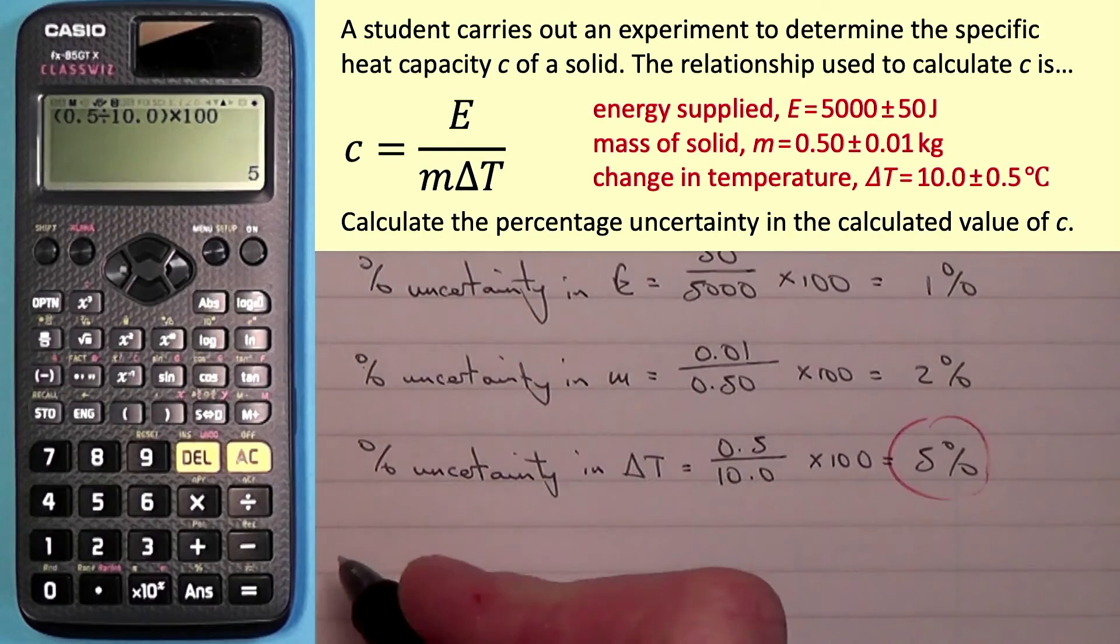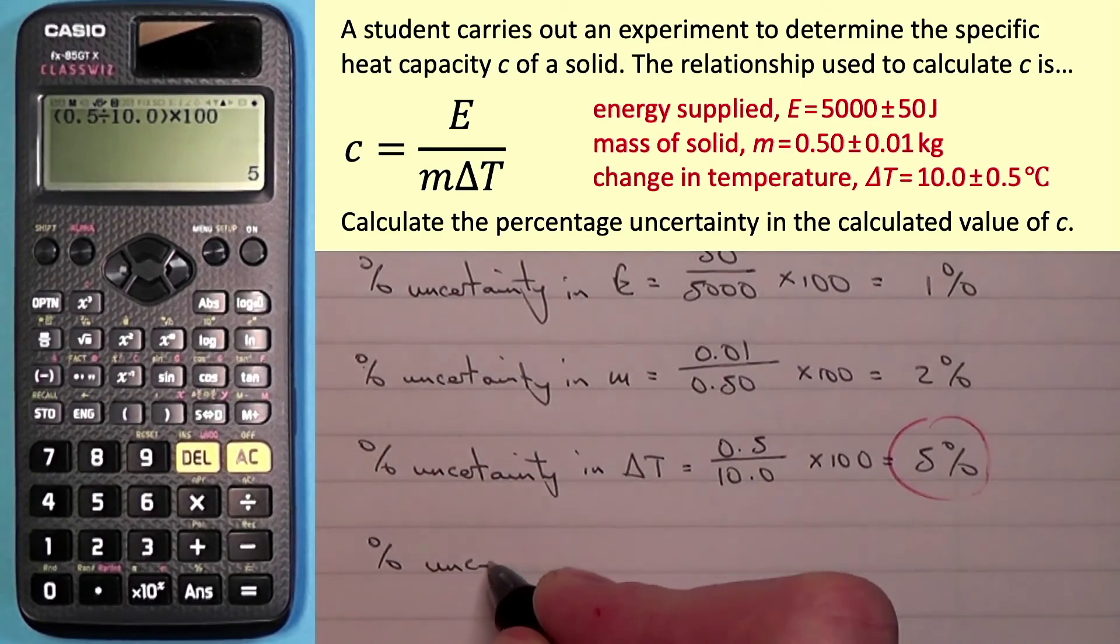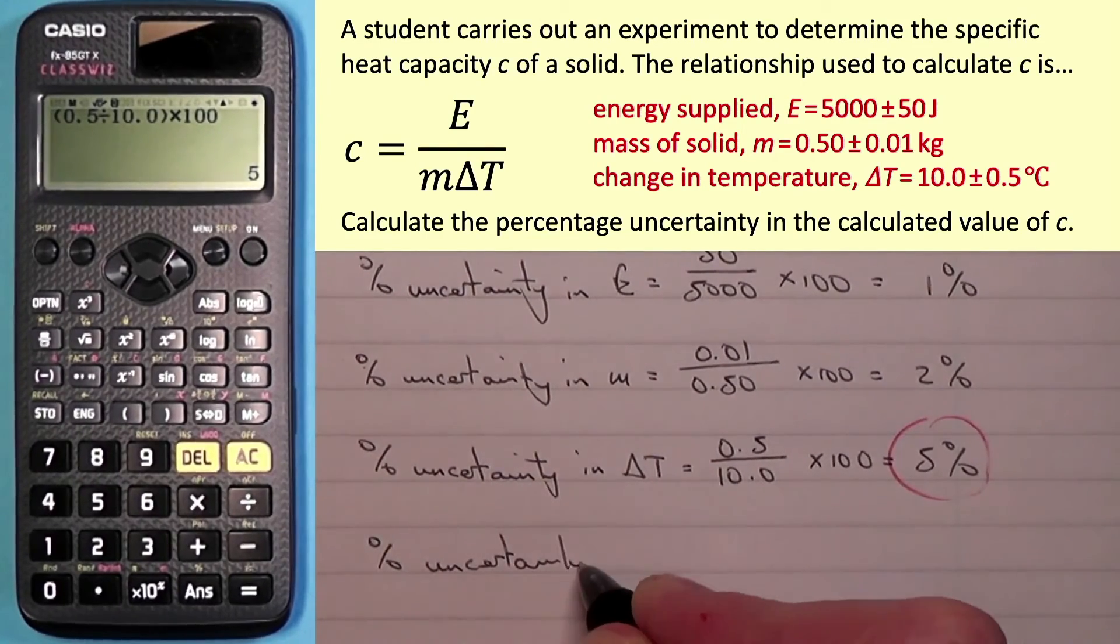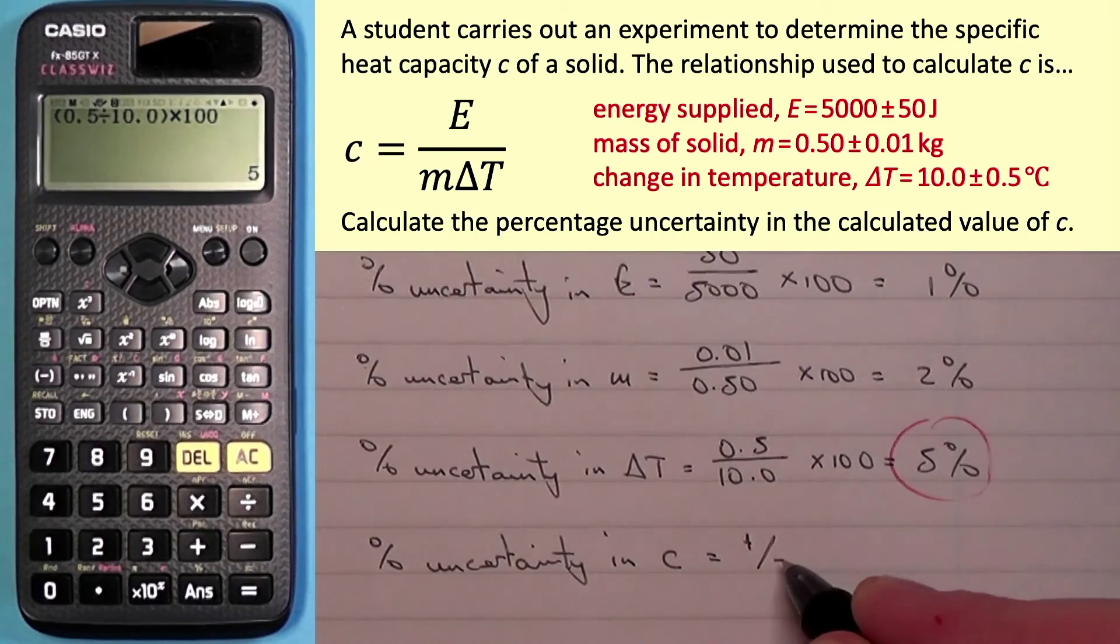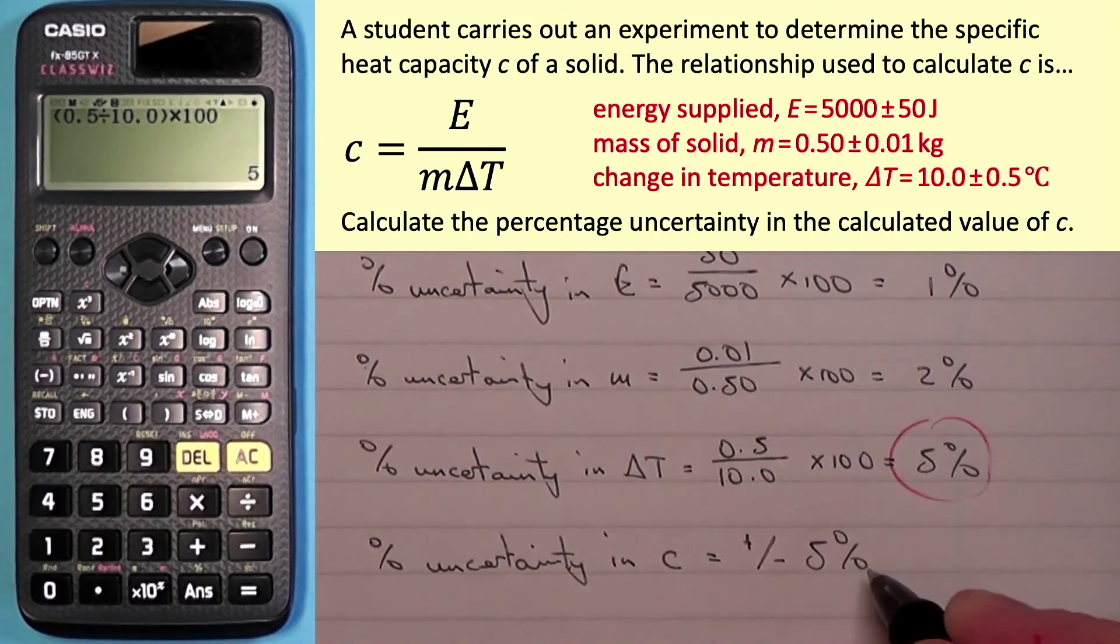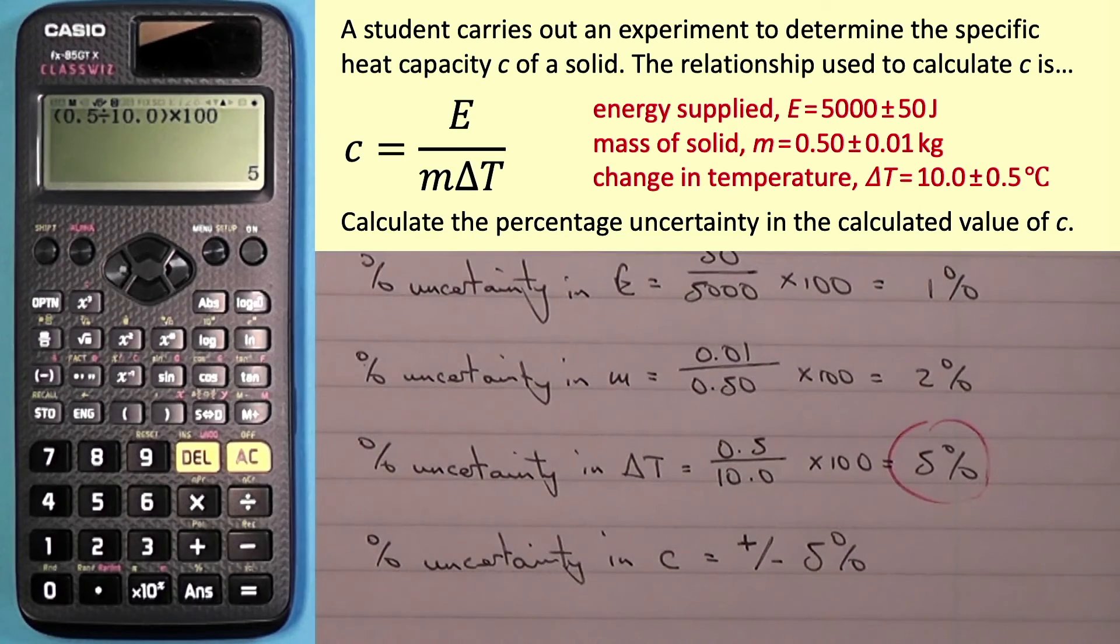So the percentage uncertainty in C is equal to plus or minus 5%. Now you might get some questions where you might actually be using this equation to find the value of C. And knowing that the uncertainty in C is 5%, we might actually have to work out the absolute uncertainty in C. In that case, we would work out the value of C, and then we would work out 5% of that value. That's maybe something I'll cover in another video.